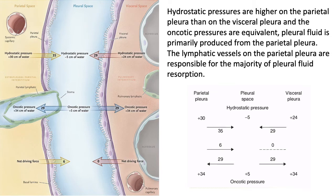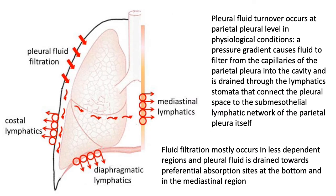Pleural fluid turnover occurs at the parietal pleural level under physiological conditions, because the pressure gradient causes fluid to filter from the capillaries of the parietal pleura into the cavity, and is drained through the lymphatic stomata that connect the pleural space to the sub-mesothelial lymphatic network of the parietal pleura itself. Therefore, fluid filtration mostly occurs in less dependent regions and pleural fluid is drained towards preferential absorption sites at the bottom of the mediastinal region.